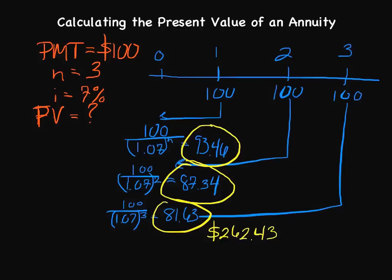After year one, we'll have $100. After year two, we'll have $200. And then finally, after three years, we'll have all $300. So discounted, that would be $262.43.